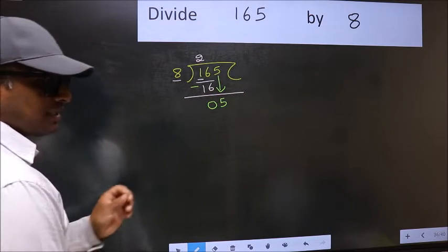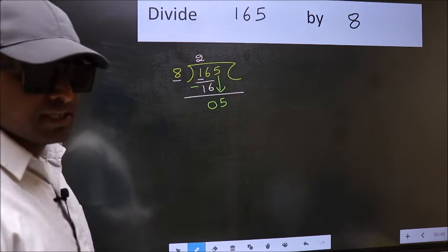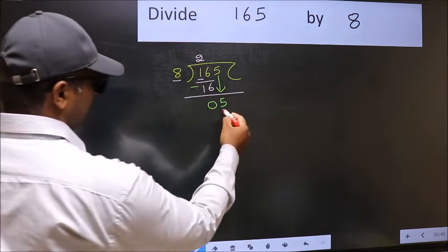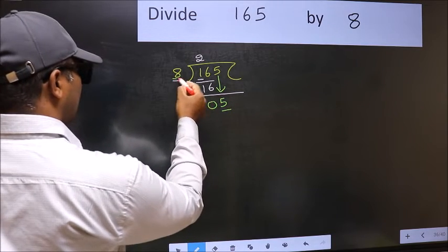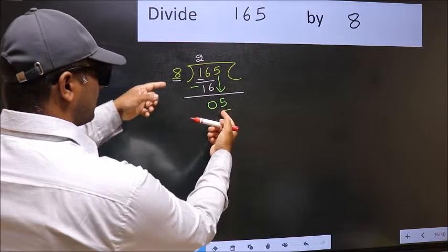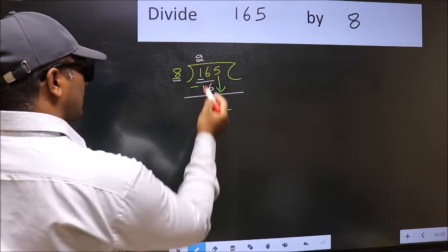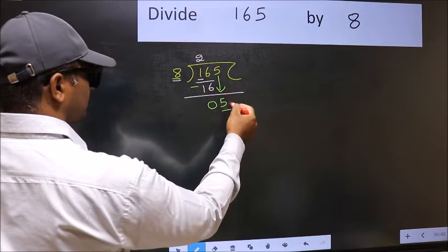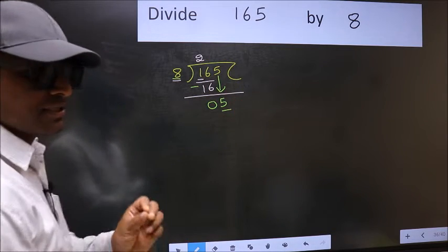After this step, the mistake happens. And the mistake is this: here we have 5 and here 8. 5 is smaller than 8. So what many do is they directly put dot and take 0.